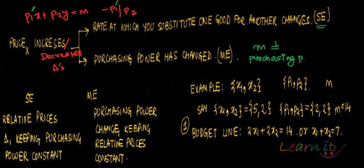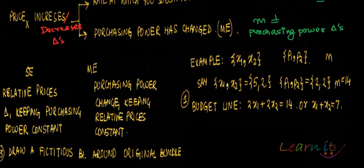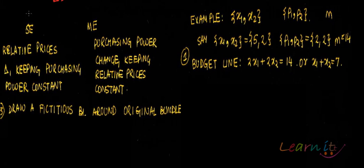When there is a change in price, even though your income is constant, your purchasing power changes. For example, if your income is 10 and the price of a commodity is 2, you could buy at most 5 units. If the price falls to 1, you can buy 10 units. Purchasing power is the amount of goods you can buy from a given unit of income. So when the price of X changes, two effects are functioning: substitution effect and income effect.